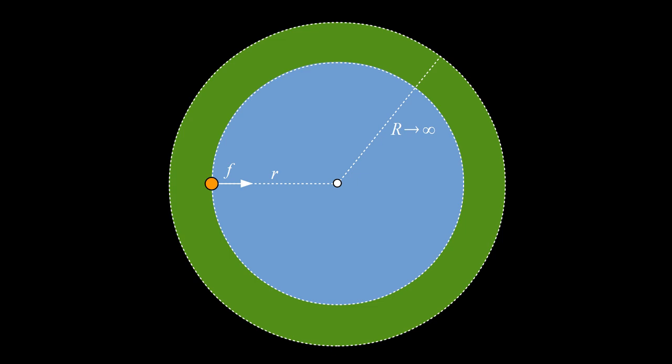Newtonian theory predicts that there is no gravitational field inside a spherical shell. So for any finite value of big R, the spherical shell exerts no gravitational force on our particle. Presumably, we can let big R grow arbitrarily large and this will still be true.